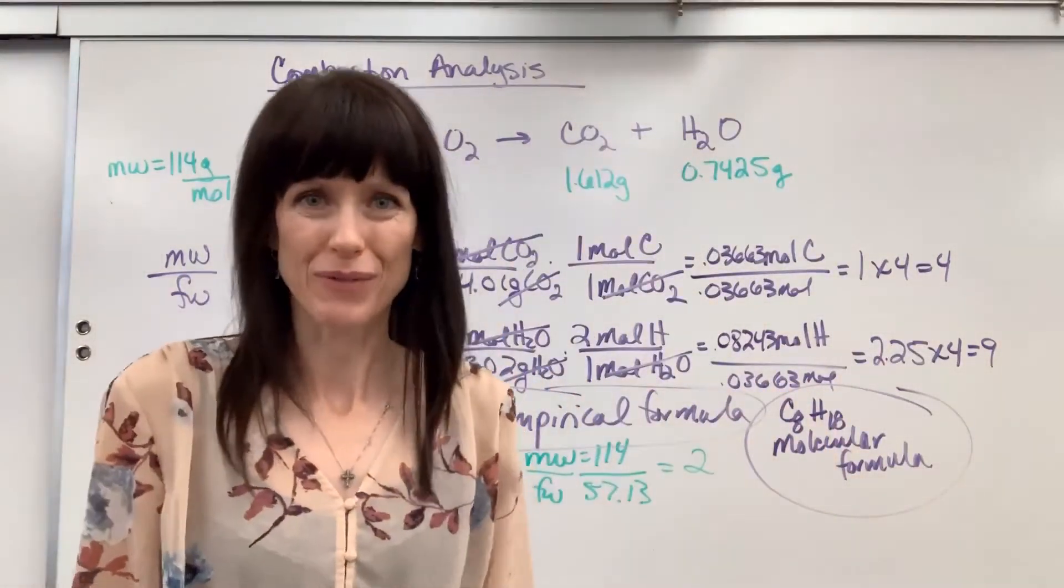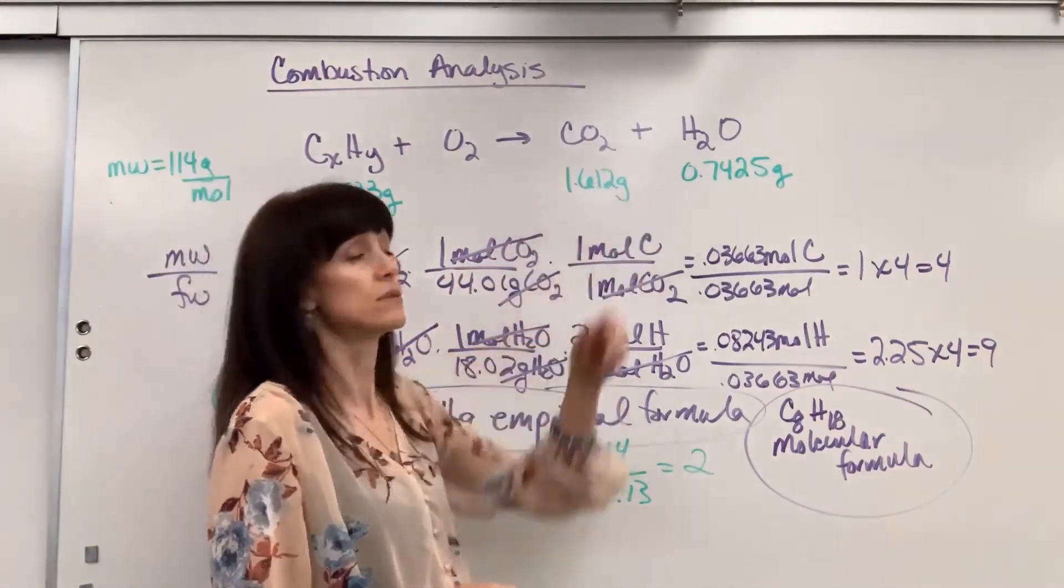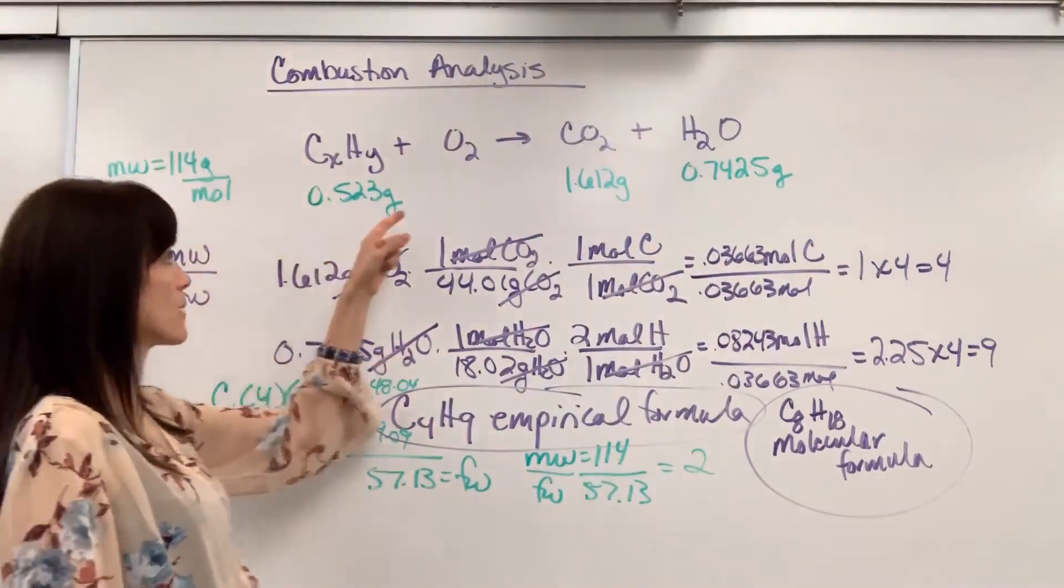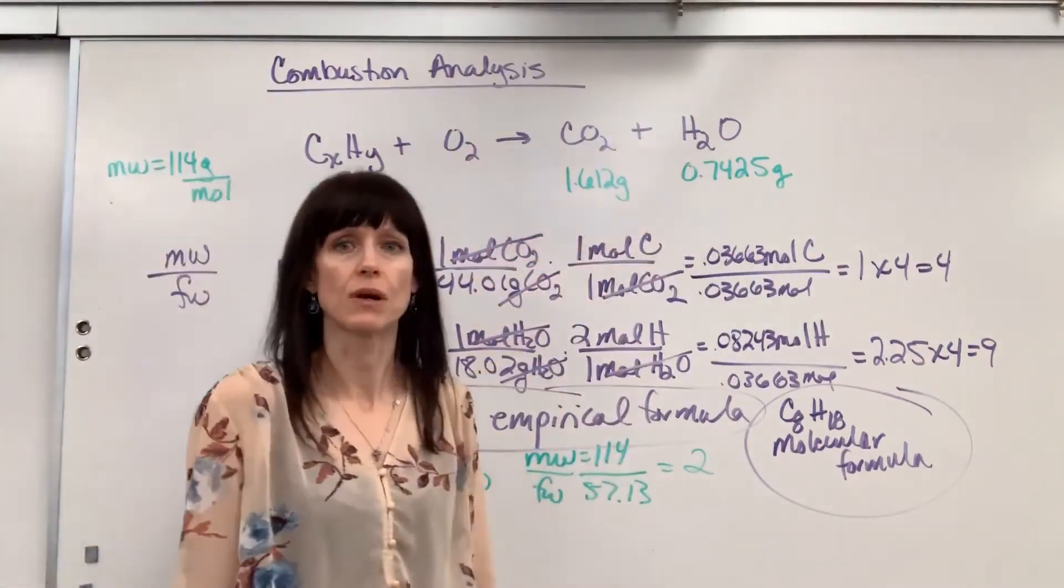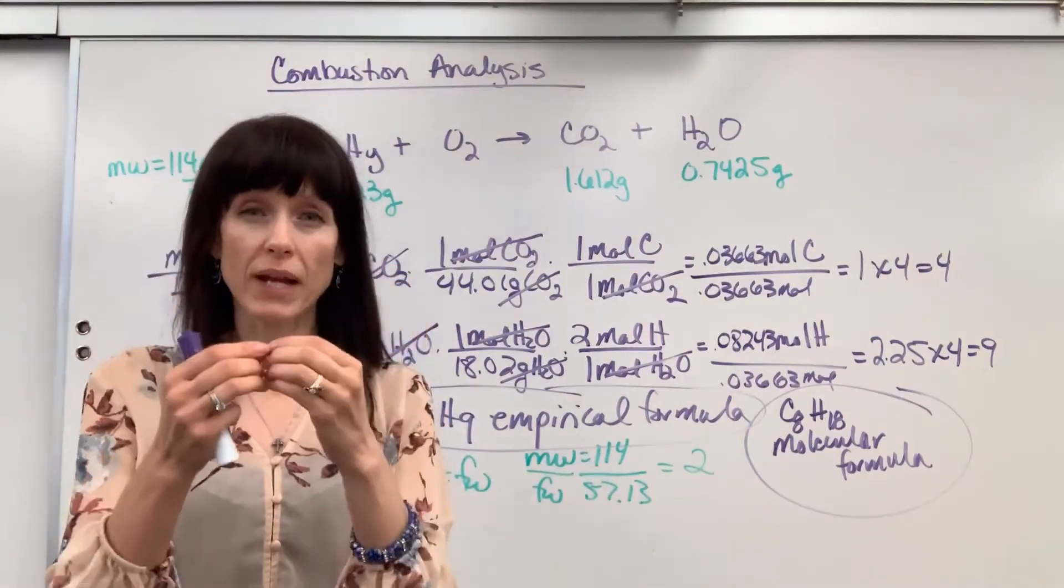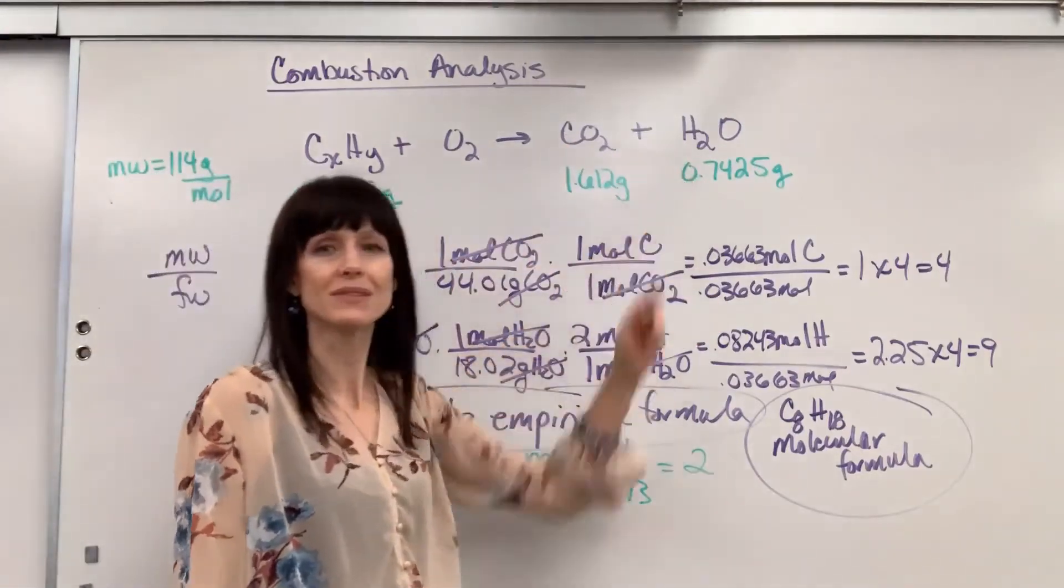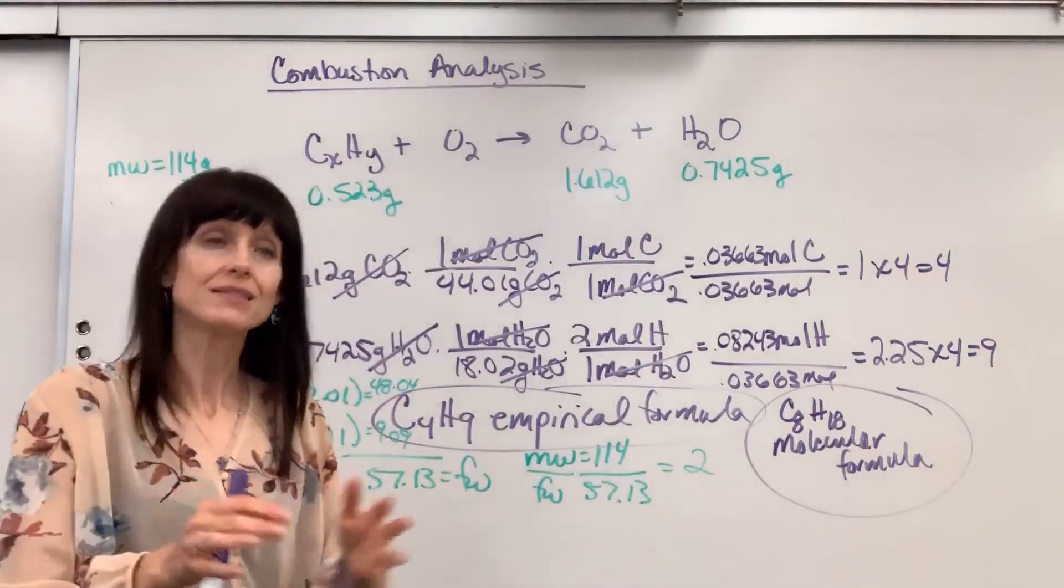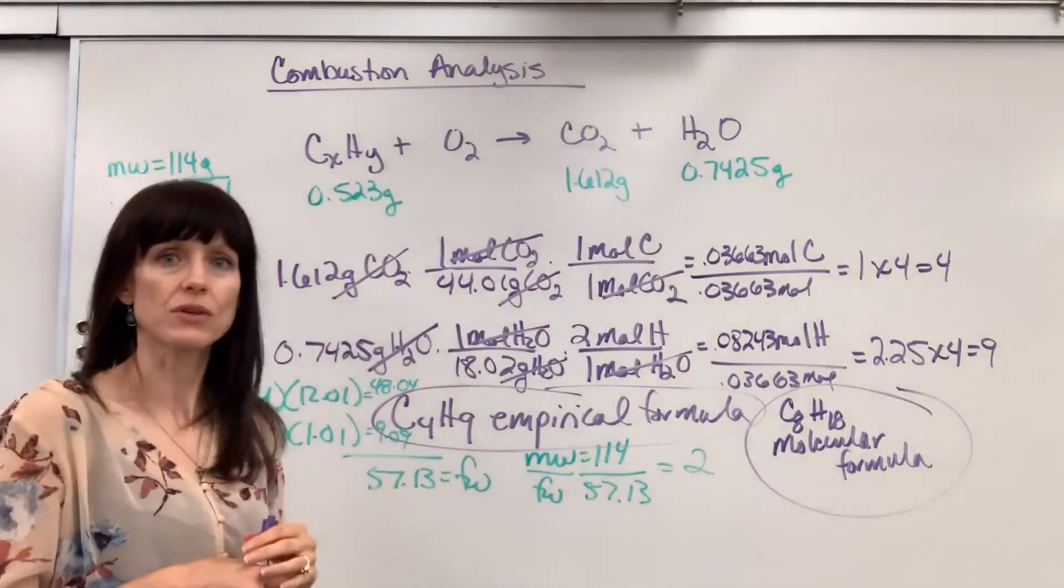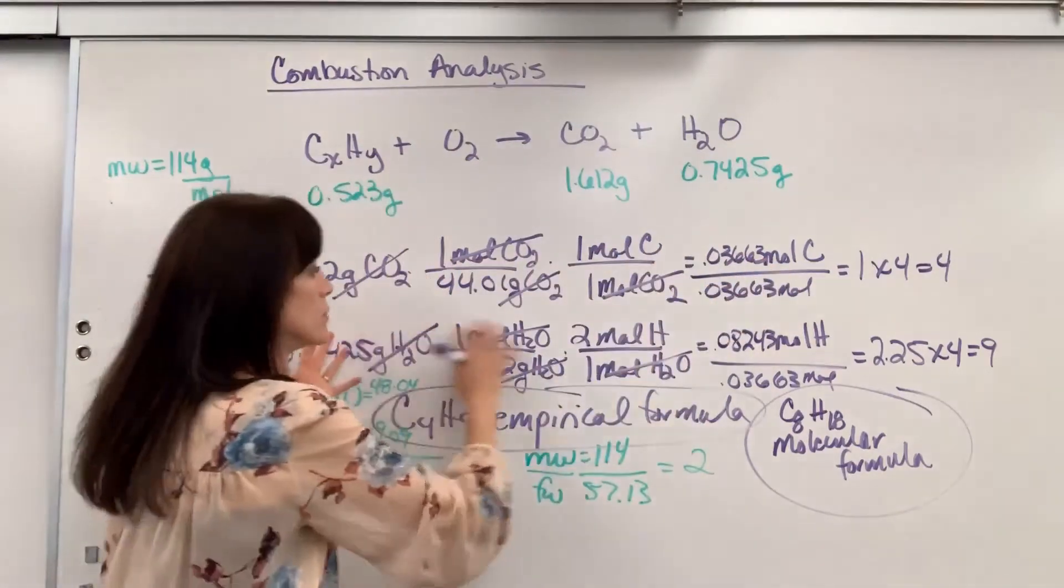So really quick review. You are given an unknown hydrocarbon. You have the masses of the CO2 and the H2O. You know combustion is always the hydrocarbon plus oxygen produces CO2 and H2O. You're thinking empirical formula is a molar ratio. So you simply find the moles of carbon and moles of hydrogen because all that carbon came from the hydrocarbon. All the hydrogen came from that hydrocarbon. Set up your stoichiometry. Find moles of carbon, moles of hydrogen.